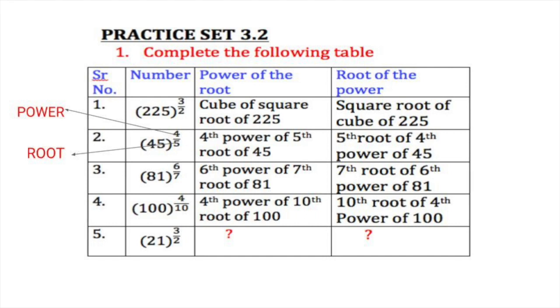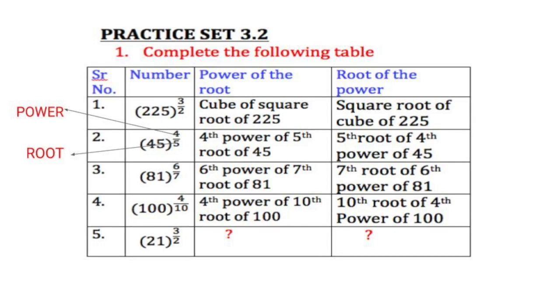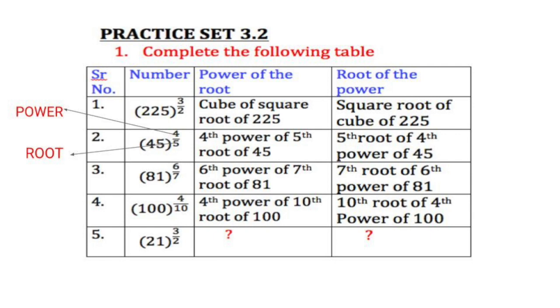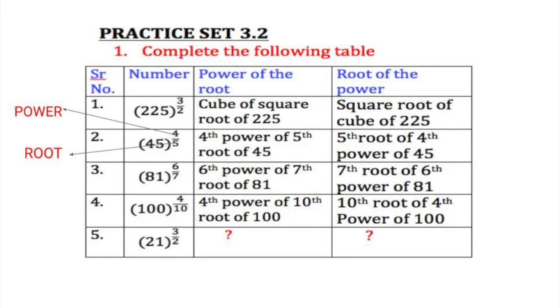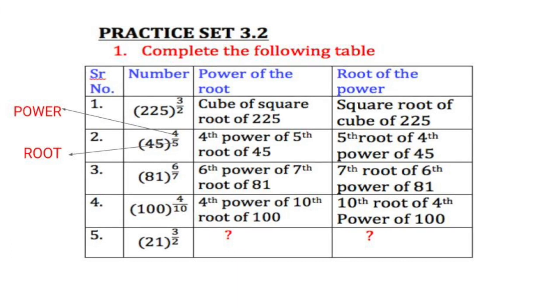Now let's start with practice set 3.2. In this you are given a table and you have to complete that table. Now there are two columns. Power of the root and root of the power. Remember when you have that index form the numerator is the power and the denominator is the root.